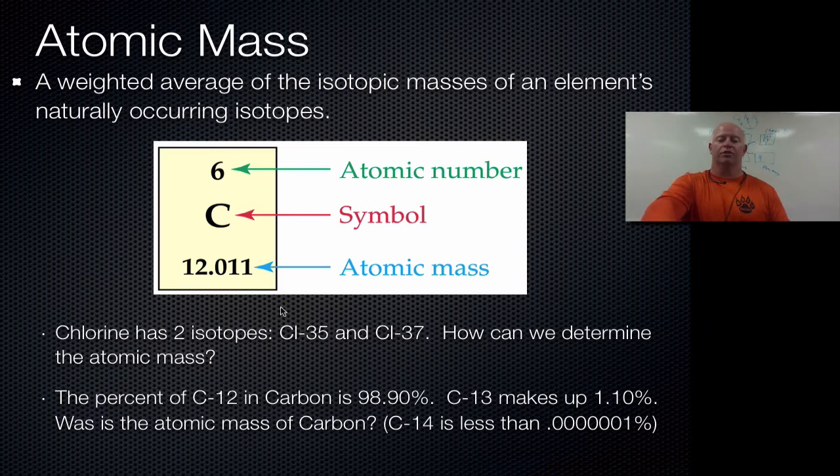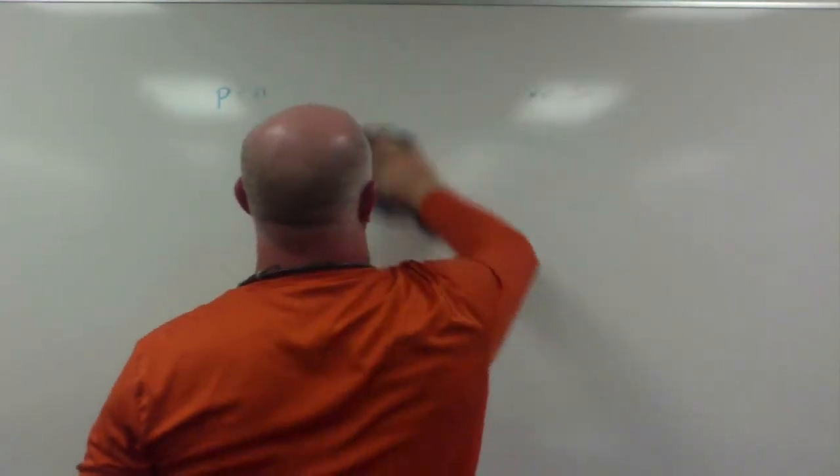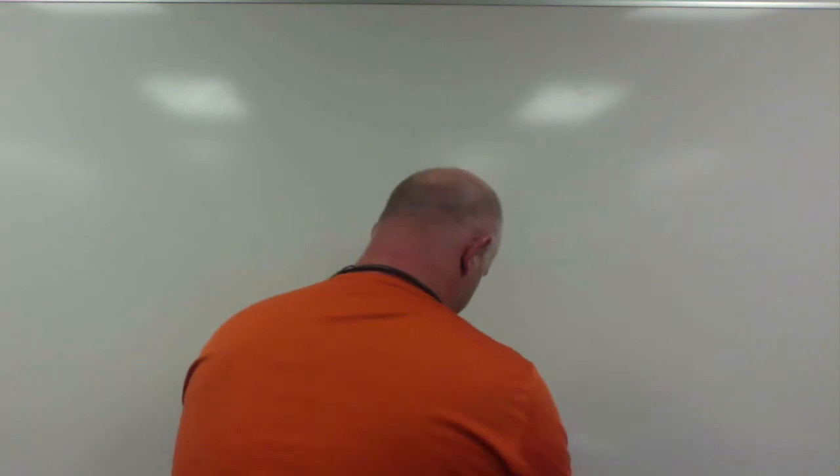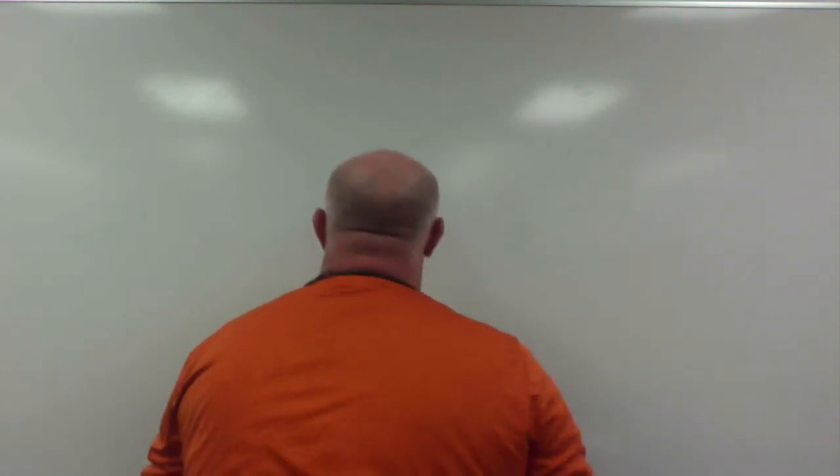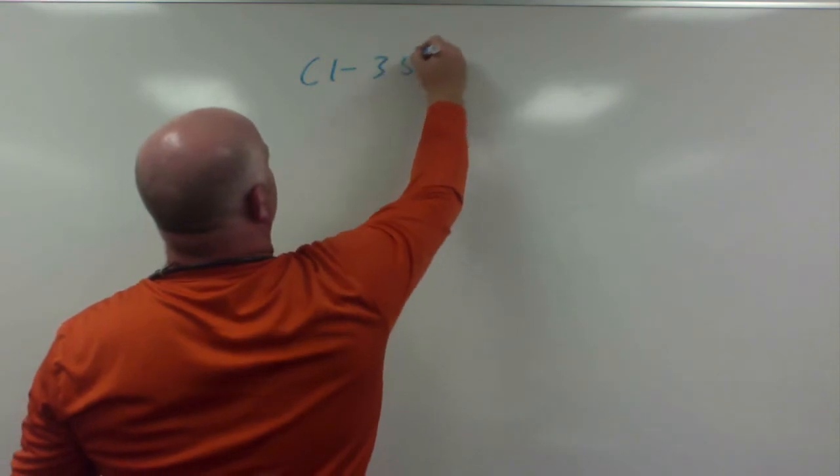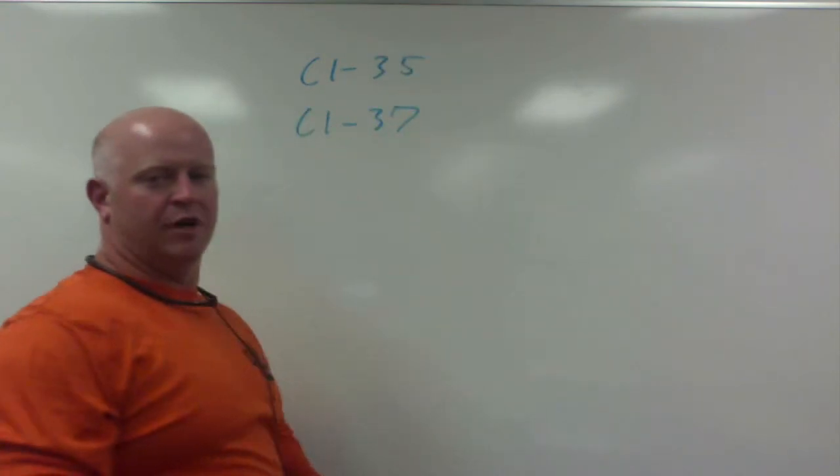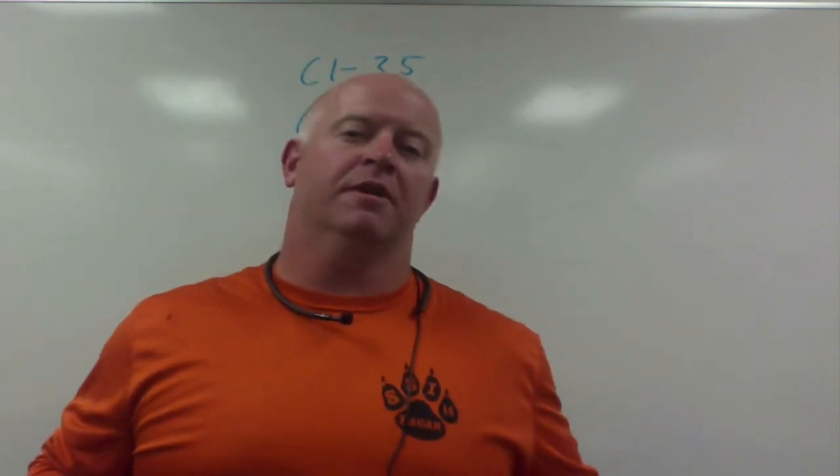If you're working with atomic mass we're going to work through that now. To do a weighted average you need to know the different isotopes you have. Let's do the example of chlorine. I'm actually going to go to the board here. We have chlorine, and chlorine has two different isotopes, so it's a pretty easy one. There's only two of them.